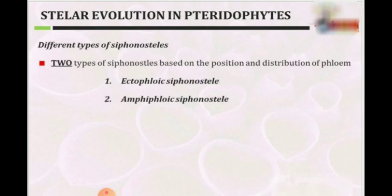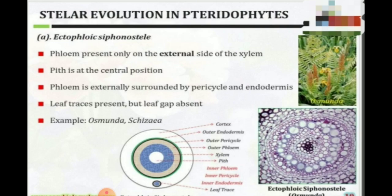Now we see the different types of siphonosteles. Siphonostele is divided into two types: ectophloic siphonostele and amphiphloic siphonostele. In ectophloic siphonostele, the pith is surrounded by a concentric xylem cylinder, and next to xylem there is a concentric phloem cylinder. Leaf traces are present but leaf gap is absent in this type of stele.